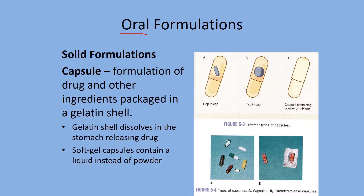The next dosage form for the oral route is capsules. The key term for capsules is a gelatin shell — gelatin is a type of protein that dissolves in water. Gel caps contain oil inside, and since gelatin dissolves in water it won't dissolve in oil. To make a small capsule more manageable, it may be put inside a larger shell, and contents are most often powder or granules. For extended-release granules, you can empty the capsules; however, you cannot crush the individual granules.